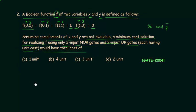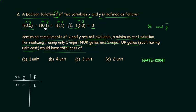First, we have to draw the truth table for f. The two variables are x and y, and f is the output. When x and y are 00, output is 1. When x and y are 01, output is 1. When x and y are 11, output is 1. And when x and y are 10, output is 0.